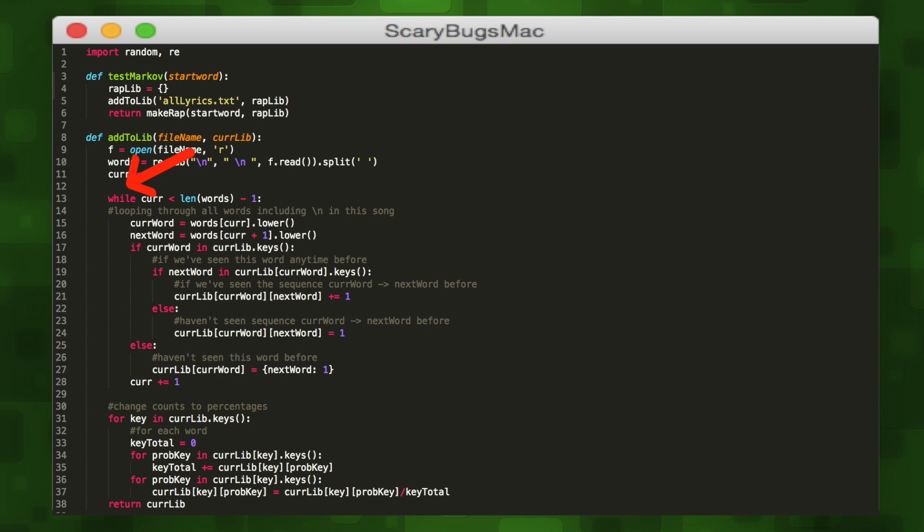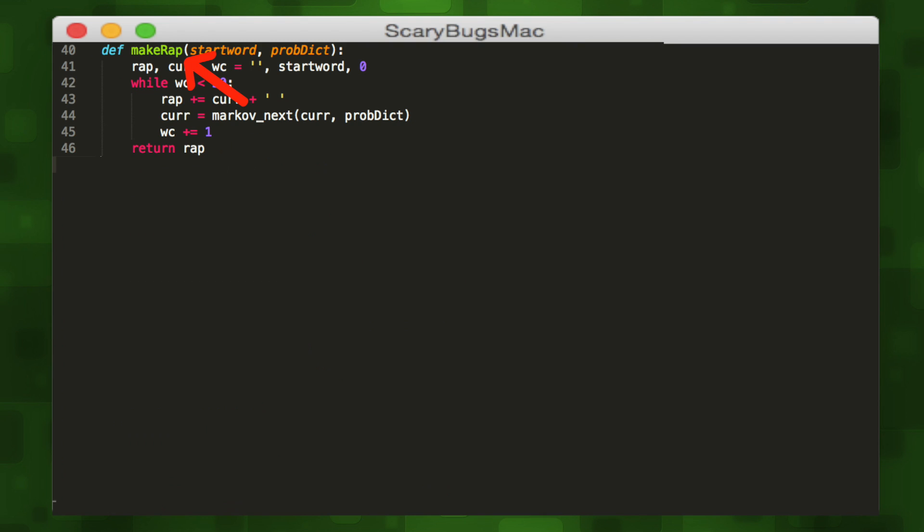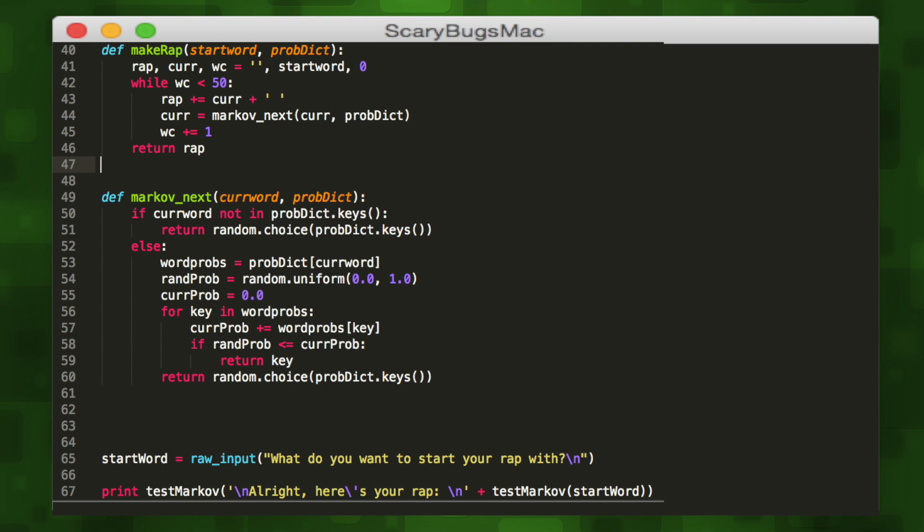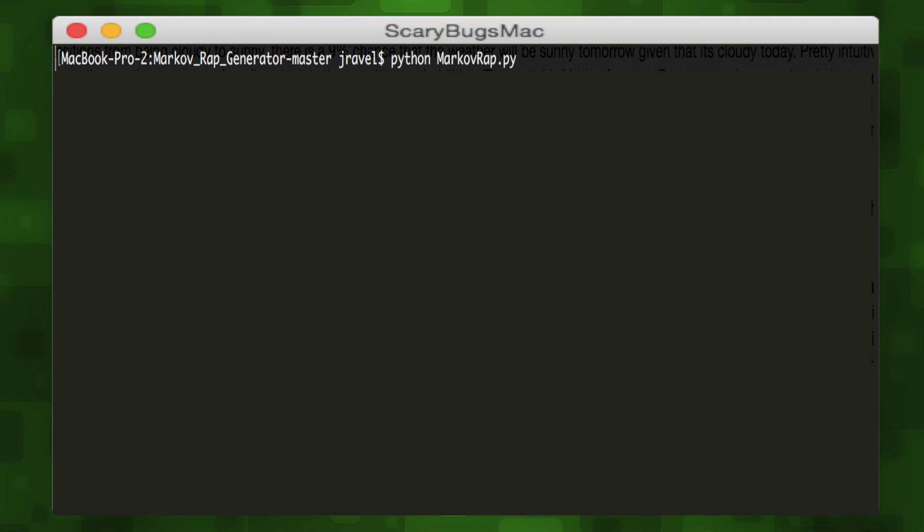It opens the lyrics file, then constructs an HMM. It iterates through every word and checks its record to see if it's a new word or sequence. If a word or sequence has appeared before, it won't re-record it. Then it changes each count to a percentage value or a transition probability. So once we've constructed our model, we can run the makeRap function. It'll take both the set of lyrics and the start word as the parameters. It'll continuously generate words via the MarkovNext function for up to 50 words. The MarkovNext function either returns a random word if the word is novel, or finds a word from the model probabilistically.